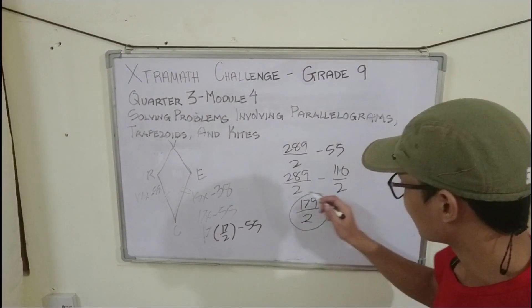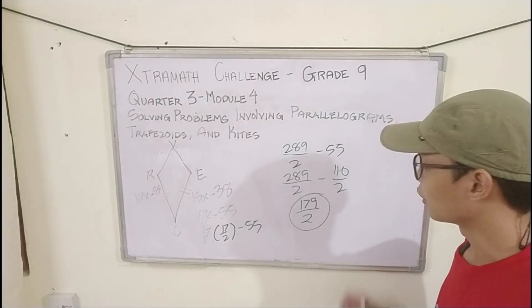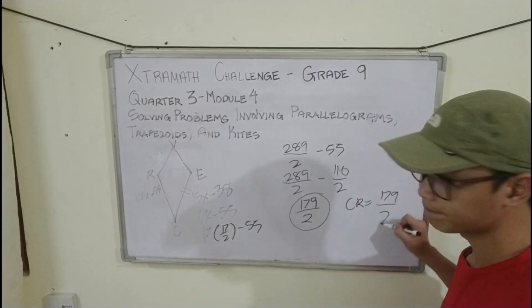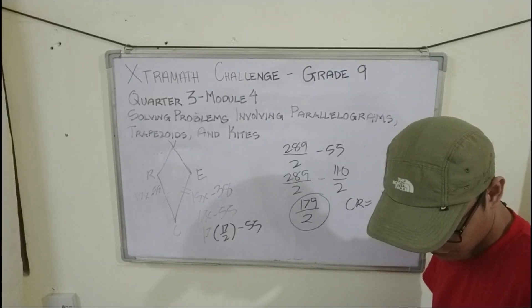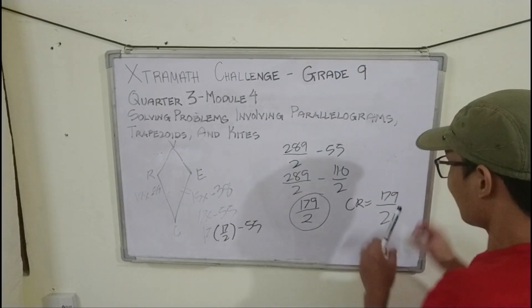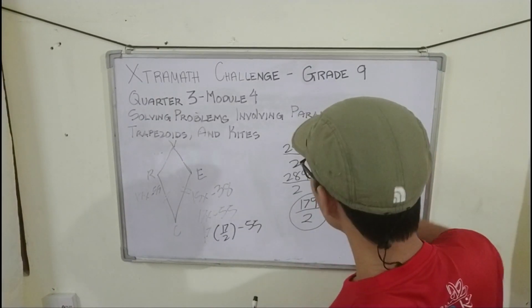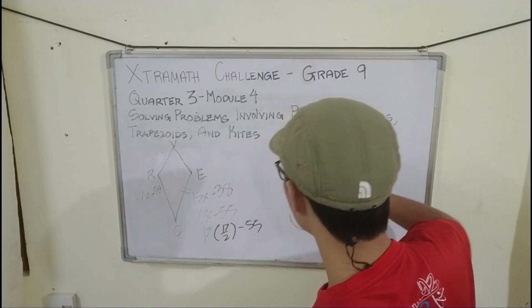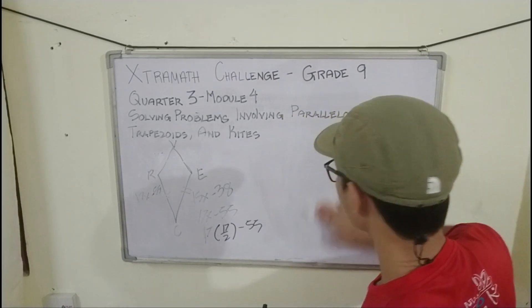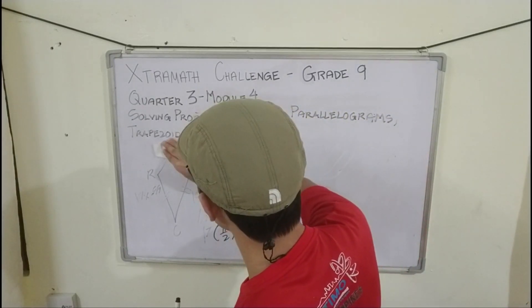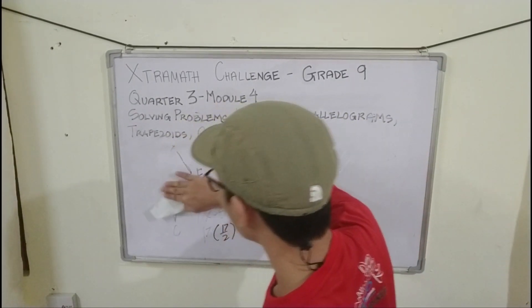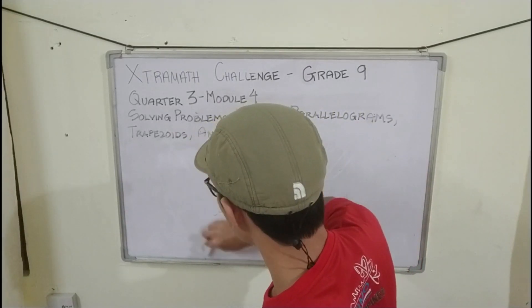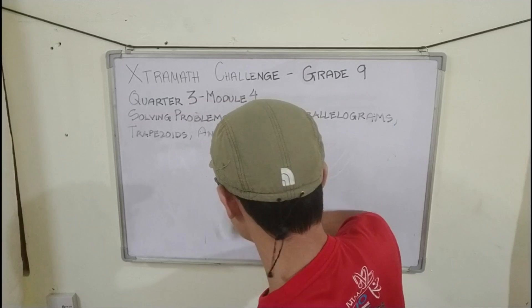So CR is equal to 179/2. Now, another problem that is also part of Module 4 is how to find the mid-segment of an isosceles trapezoid.